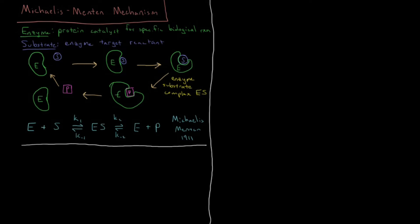In this video we're going to discuss the Michaelis-Menten mechanism for enzyme kinetics. An enzyme is a catalyst which is a protein and functions for a specific biological reaction. The substrate is whatever reactant molecule is reacting with the enzyme and is usually a very specific kind of molecule, often even a specific enantiomer. The enzyme and substrate are both floating around in solution. The enzyme binds to the substrate, changes its conformation to lock around the substrate, catalyzes whatever reaction the substrate undergoes into the given product, then releases the product and the cycle continues.